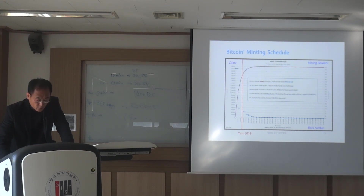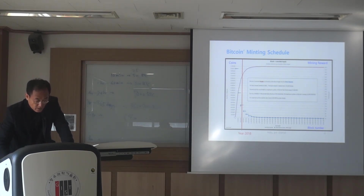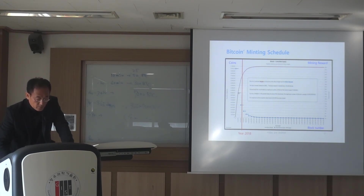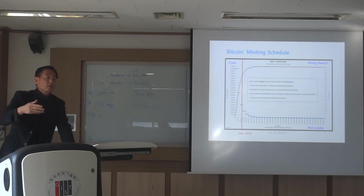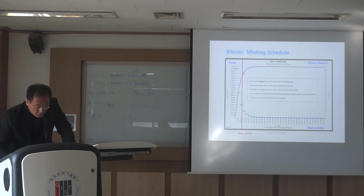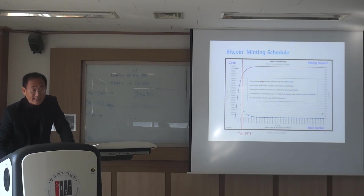So in the year 2018, when this lecture note was made, the amount of Bitcoin created per each new block was 12.5. Every four years, the amount of Bitcoin created is half — only half of the amount in the previous period are going to be newly created. So now in 2023, we are in this phase where only 6.25 Bitcoin are created per each block.